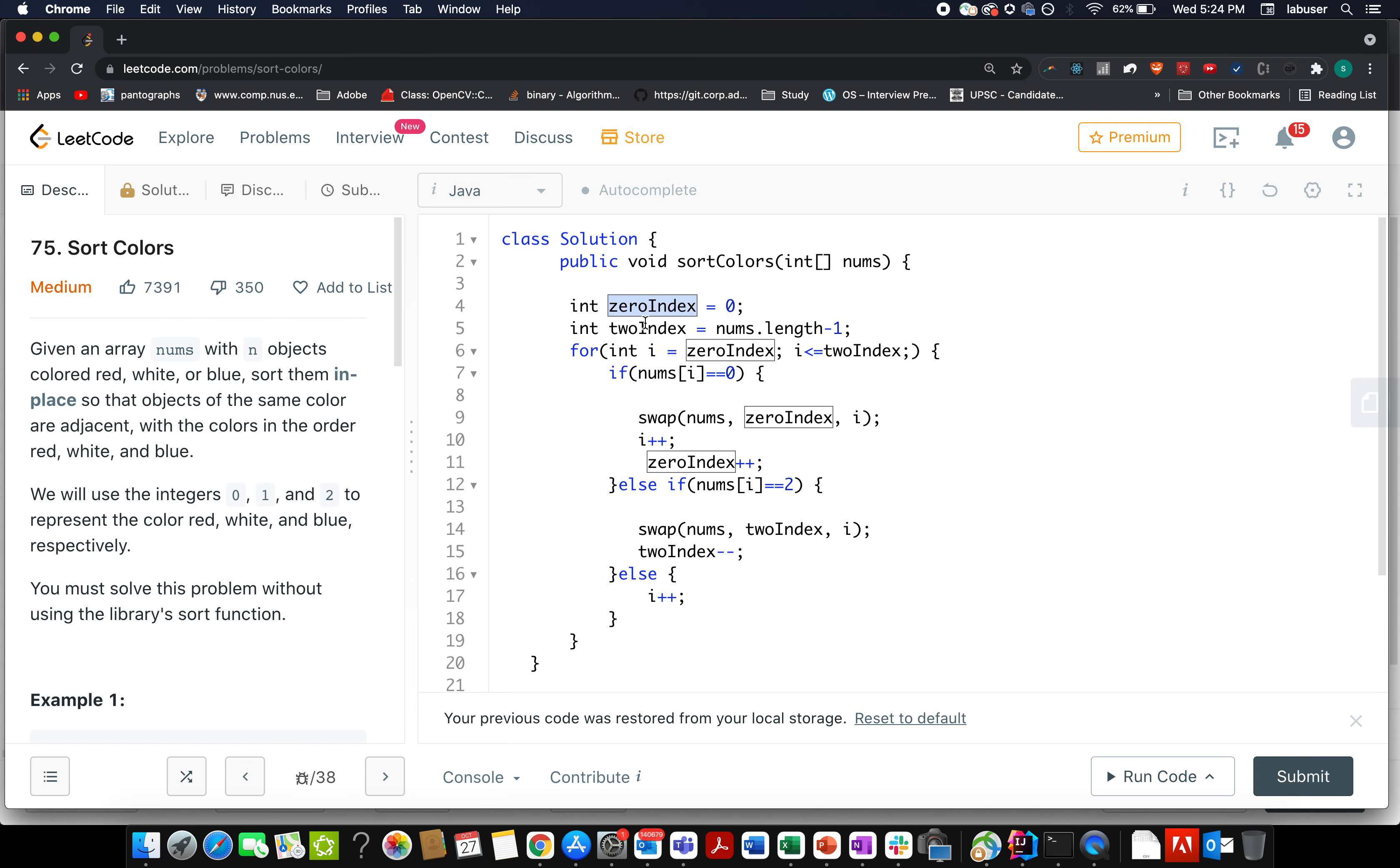Here I have taken two variables, zero index and two index. Zero index for storing all the zeros at the starting of the array, two index for storing all the twos at the ending of the array. Then I start the iterations from i equals to 0 up till i is less than equal to two index. If my current element happens to be zero, then what do I do? I swap it with the one held at zero index value. Once the swap is performed I increment the pointer of i and I increment the zero pointer as well. In case my element happens to be 2, I swap the element held at two index with i and reduce the two index pointer because we have already set the terminal two index value position with 2.